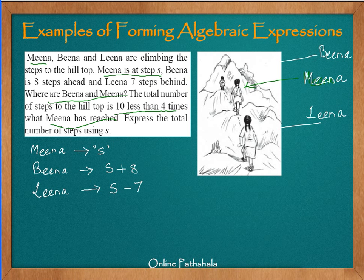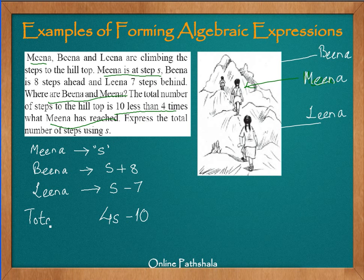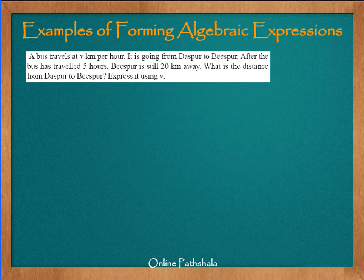Now we want to find out the total number of steps using S. The total number of steps to the hilltop is 10 less than 4 times what Mina has reached. So 4 times what Mina has reached would be 4S, and we subtract 10 steps. So total steps equals 4S minus 10.